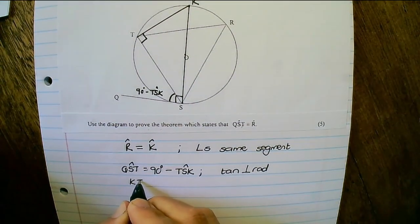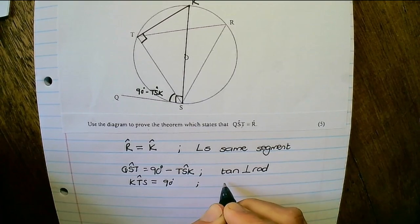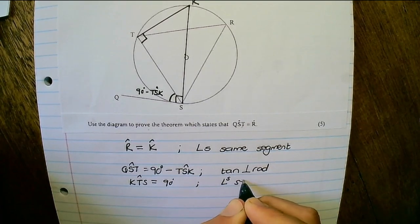So KTS is equals to 90 degrees, the reason, angles in a semicircle.